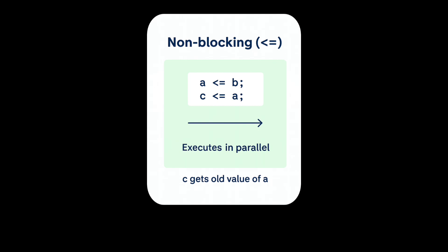But with non-blocking, if we consider example A <= B and C <= A, in this case A and C will get updated at the same time. They will execute parallelly. So A will get the value of B, but C will get the old value of A because both updated together.